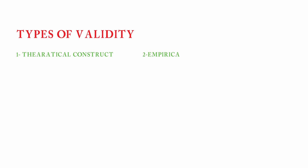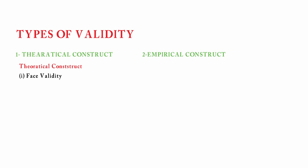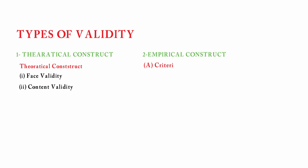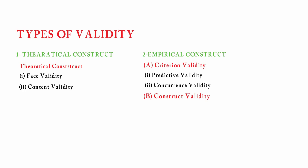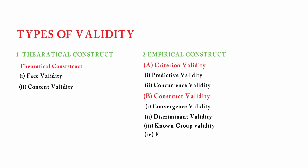Starting from the types of validity, basically there are two types: number one is the theoretical construct and empirical construct. Theoretical construct is further divided into two types — face validity and content validity. These two are the most important. Empirical construct is further divided into criterion validity and construct validity, and they also have further subtypes.